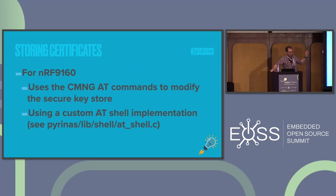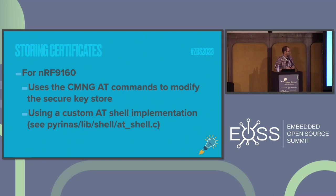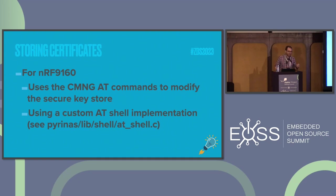The commands we're using under the hood are the CMNG AT commands to modify and update the secure key store. We're using a custom AT shell implementation. I've provided some links and info if you want to check it out. All of this stuff is Apache 2, so you're more than welcome to take it and run with it.